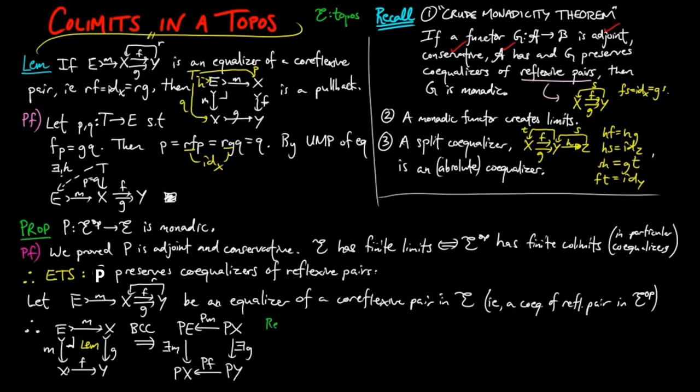Also recall that by the Beck-Chevalley condition, Pf composed with exists F is equal to the identity on PX. Pm composed with exists M is equal to the identity on PE. Therefore,